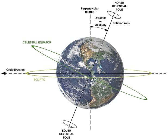The inclination has varied from about 22.0 degrees to 24.5 degrees over the past 5 million years. An observer standing on Earth's equator visualizes the celestial equator as a semicircle passing through the zenith, the point directly overhead.